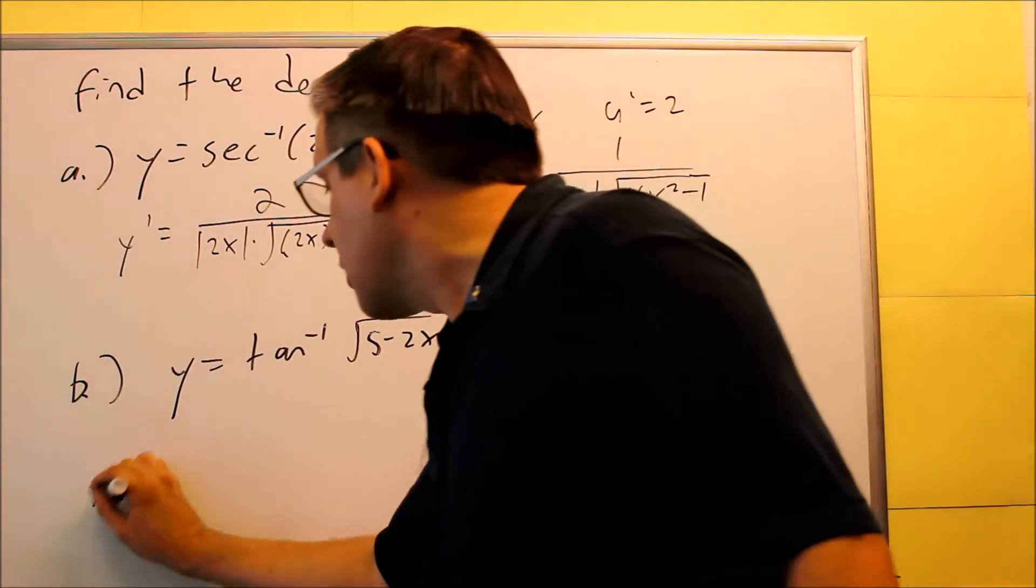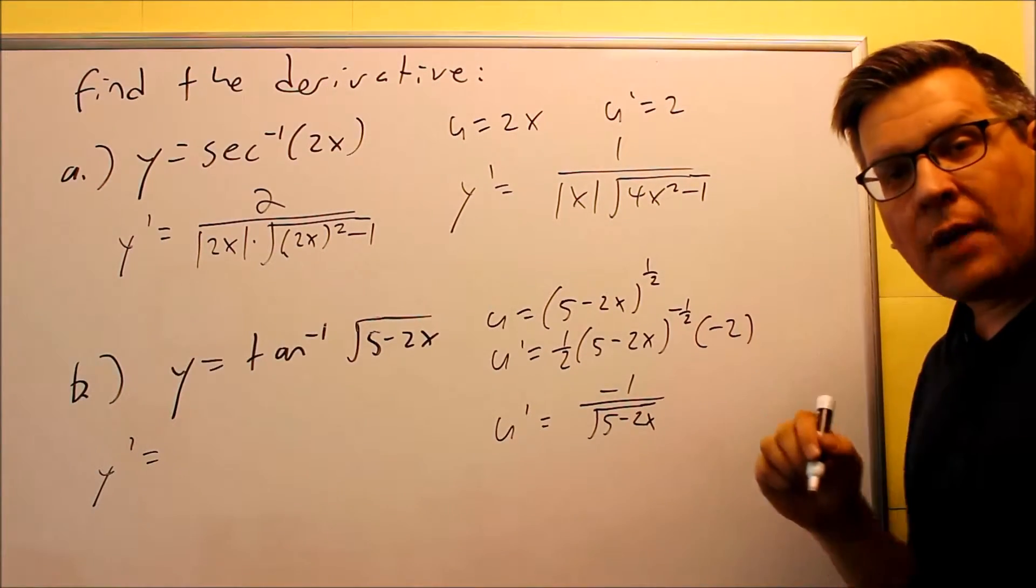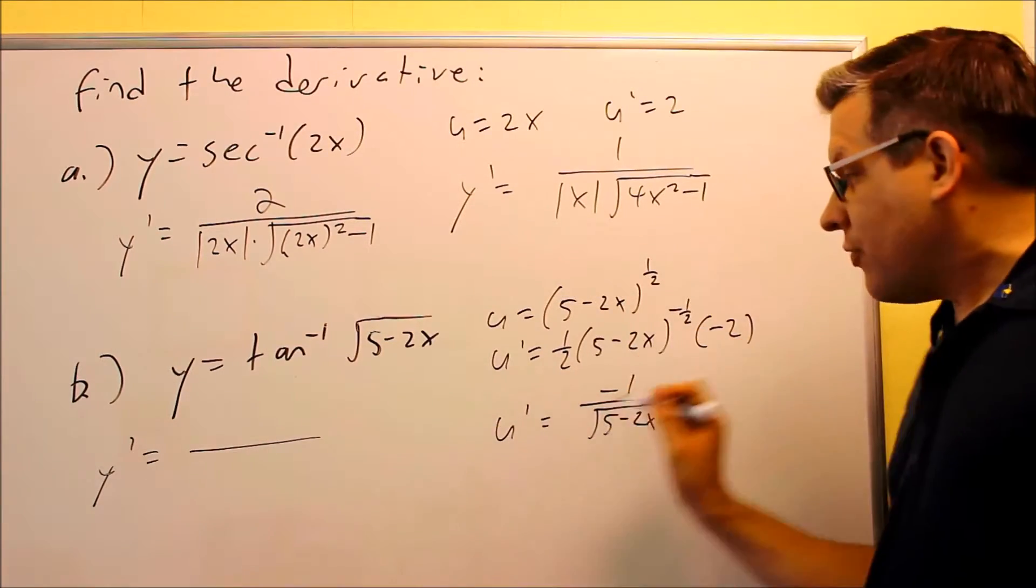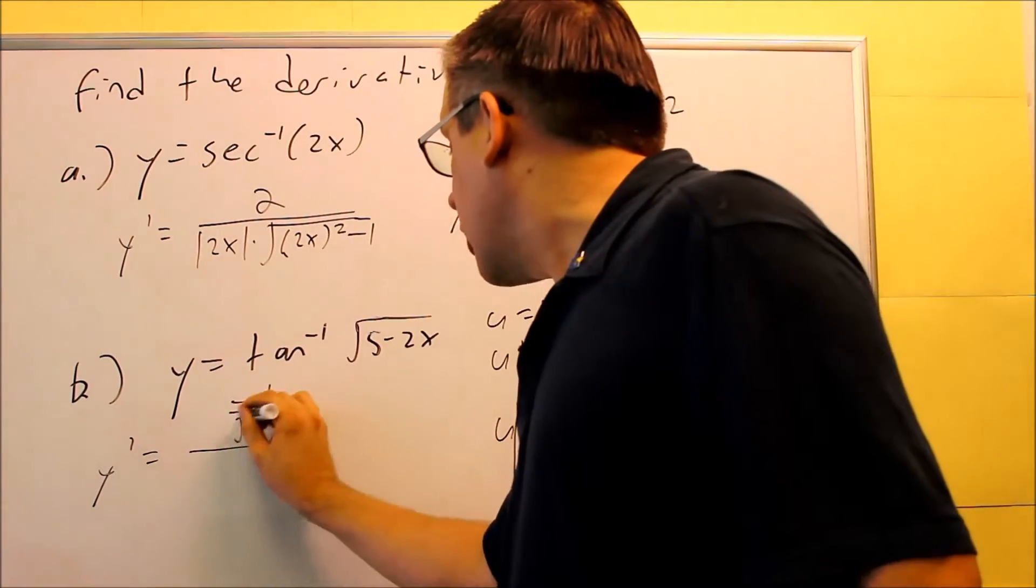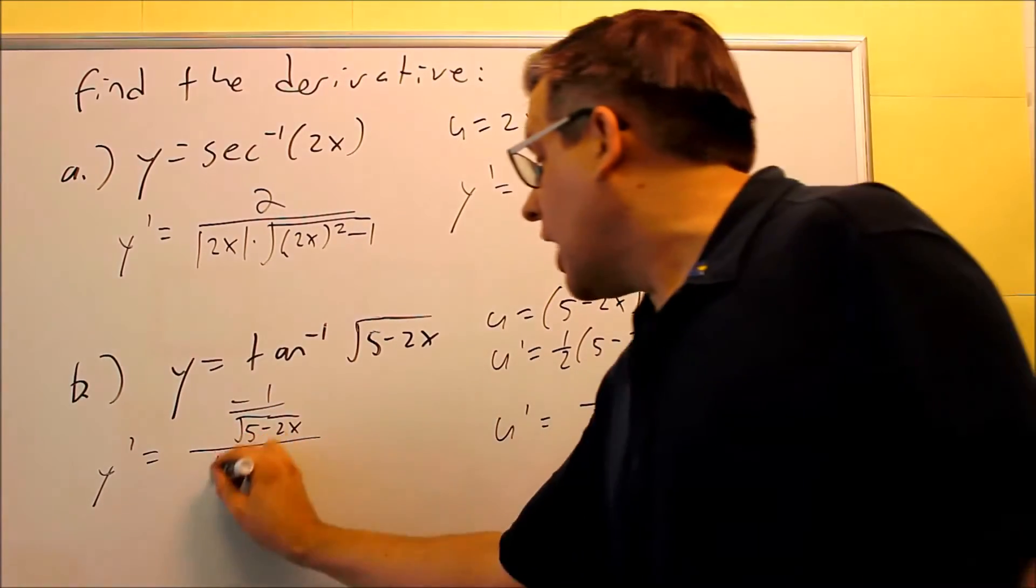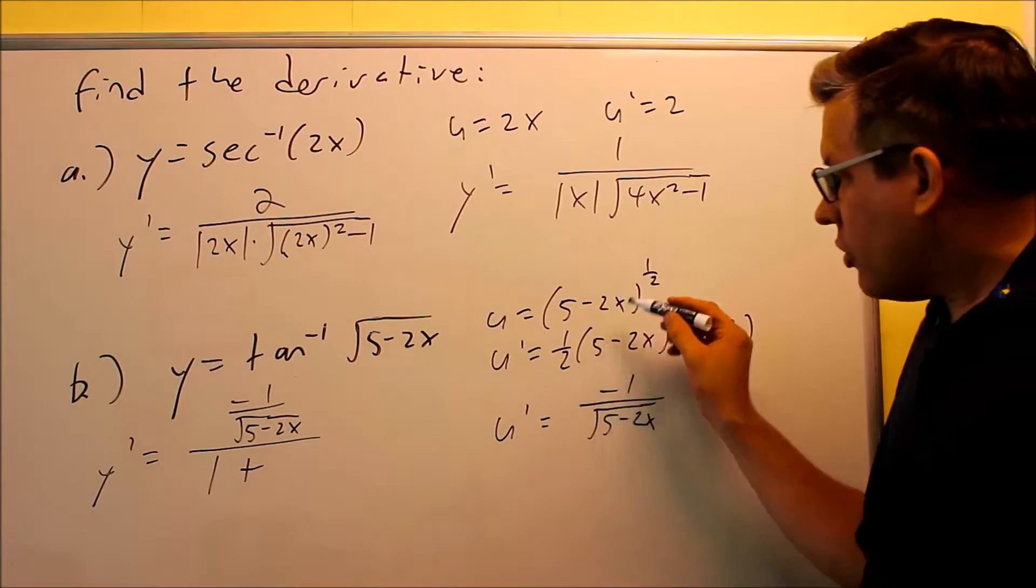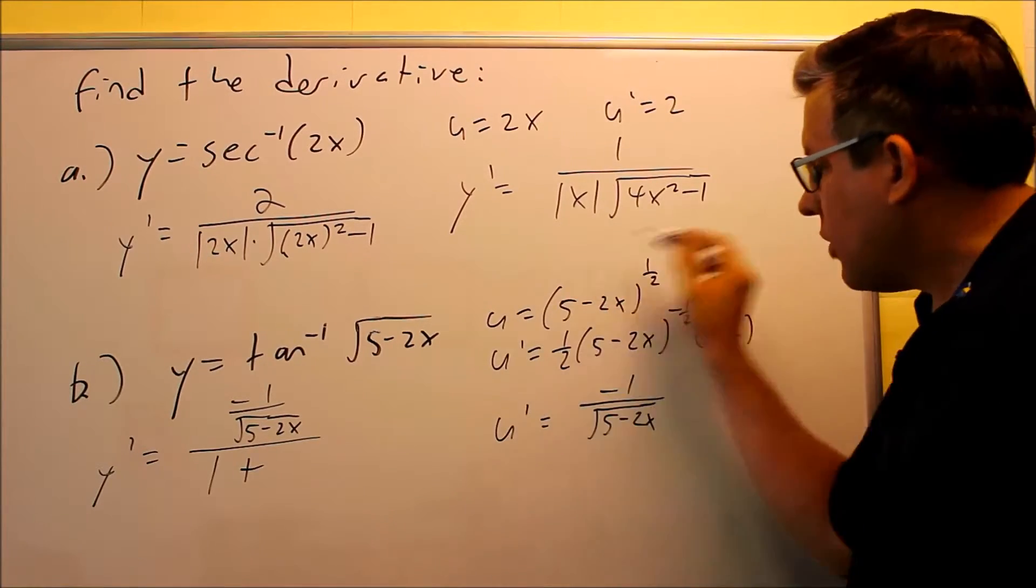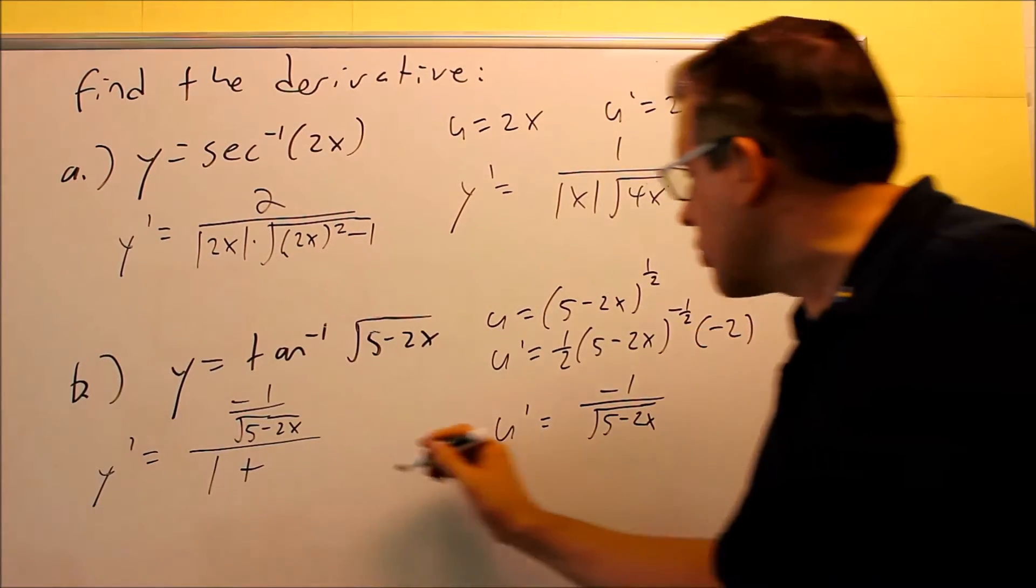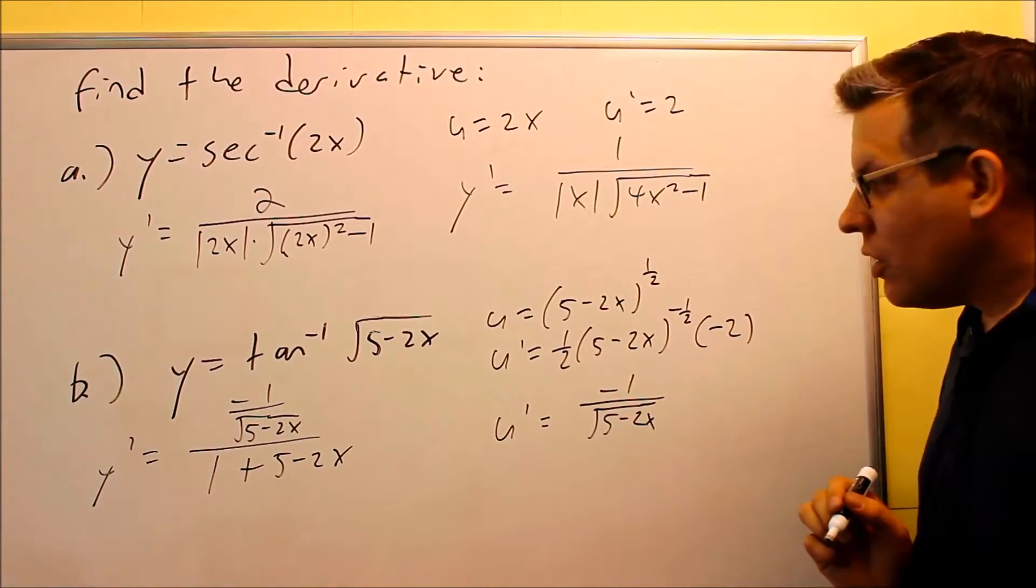For the formula, the formula for inverse tangent, if you refer back to that, that's u-prime over 1 plus u-squared. On top I have the u-prime, that's this fraction, negative 1 over the square root of 5 minus 2x. Down below, I have 1 plus u-squared. Now the u we said was this square root. If we square that, the square root will cancel out, so you're going to get 5 minus 2x left over down below.